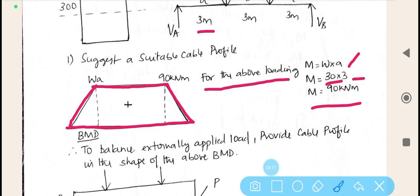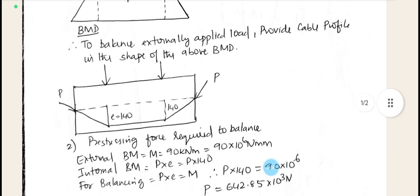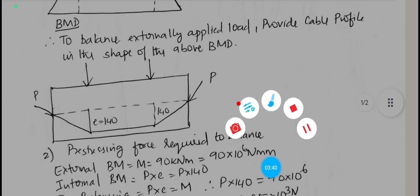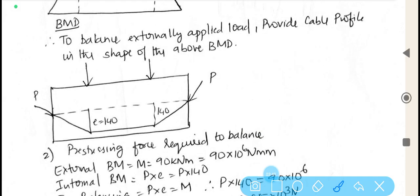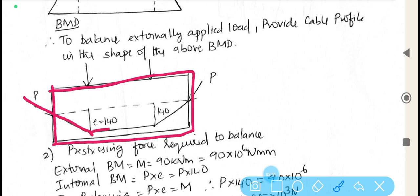In order to balance the externally applied load, provide cable profile in the shape of the above bending moment diagram. Which means, in order to counteract the effect of the external actions, we are going to suggest the profile of the cable which is similar to the bending moment profile. Here I have drawn a two-dimensional sketch and suggested a cable which is having the shape of trapezoidal.